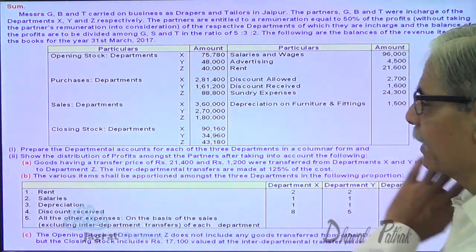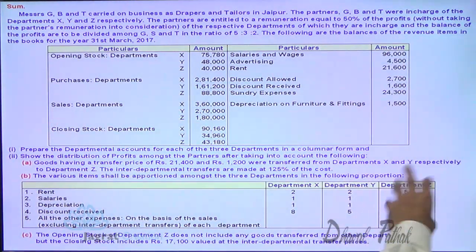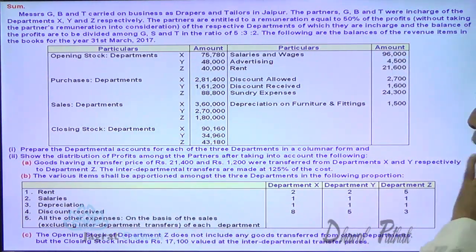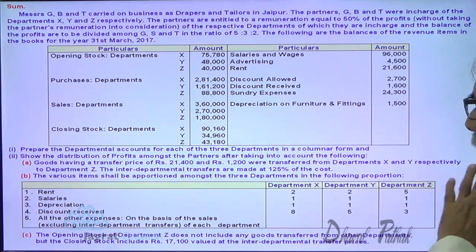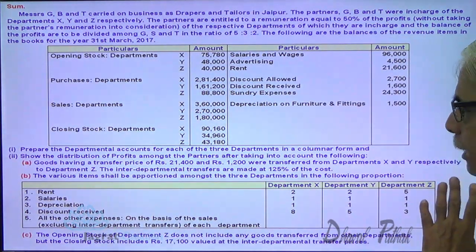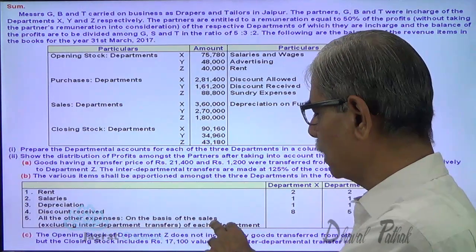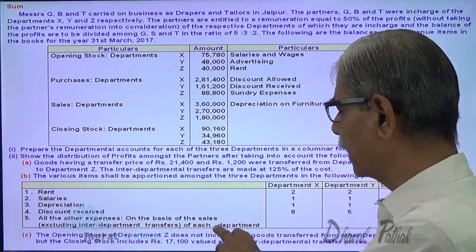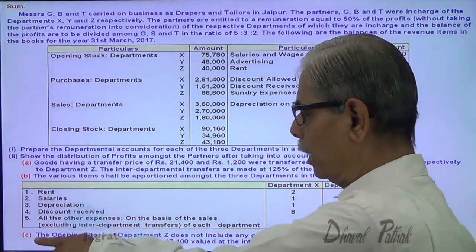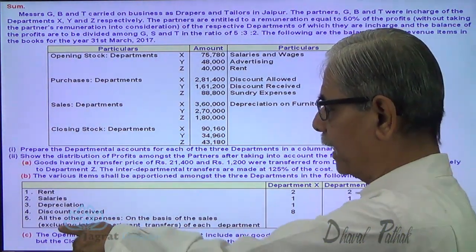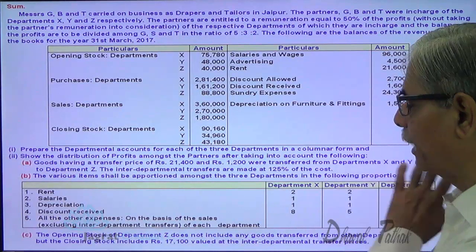The various items shall be apportioned amongst three departments in the following proportions: Rent — 2:2:5; Salary — 1:1:1; Depreciation — 1:1:1; Discount received — 8:5:3. All other expenses on the basis of sales, excluding inter-department transfers for each department. So when you work out the sales ratio, you exclude the inter-department transfers of each department — that is an important point.